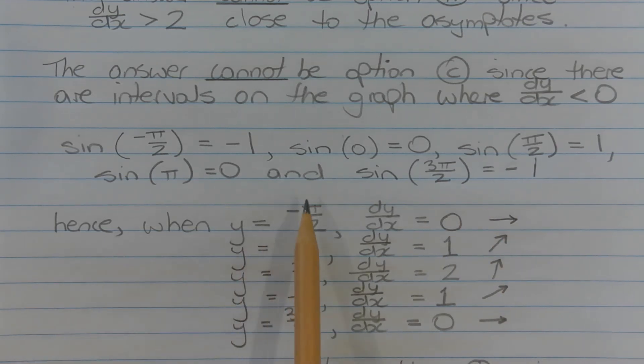Hence, when y is equal to negative pi over 2, dy/dx equals 0. When y equals 0, dy/dx equals 1. When y is equal to pi over 2, dy/dx equals 2. When y equals pi, dy/dx equals 1. And when y is equal to 3 pi over 2, dy/dx equals 0.